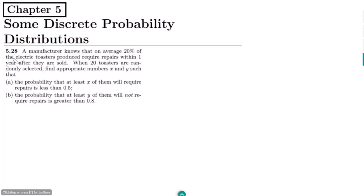Hello guys, this is question 5.28. The statement of this question is: a manufacturer knows that on average 20 percent of the electric toasters produced require repairs within one year after they are sold. When 20 toasters are randomly selected, find appropriate numbers x and y such that: part a, the probability that at least x of them will require repair is less than 0.5, and part b, the probability that at least y of them will not require repair is greater than 0.8.